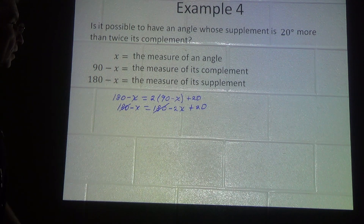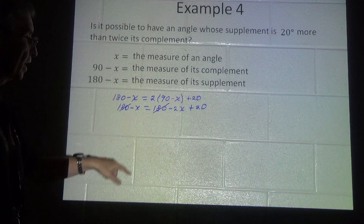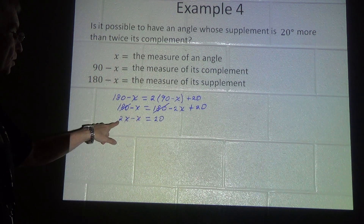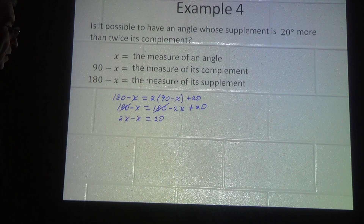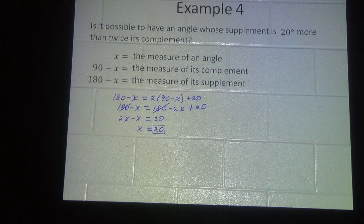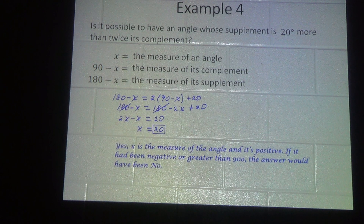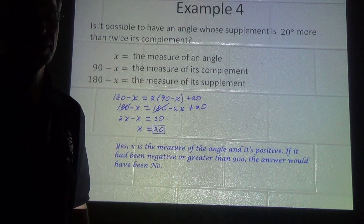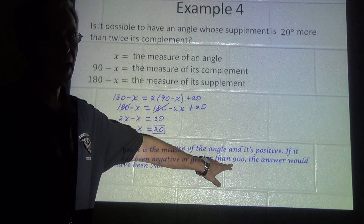Moving x to the other side gives us 2x minus x equals 20, so x equals 20. The measure of the angle we're interested in is 20 degrees. Yes, it is possible — x is positive. If the result had been negative or greater than 90 degrees, the answer would have been no. Note: the limit for this type of problem should be 90 degrees, not 900.